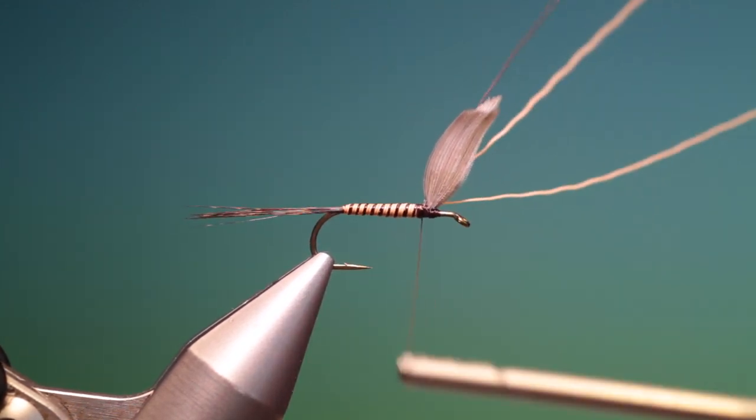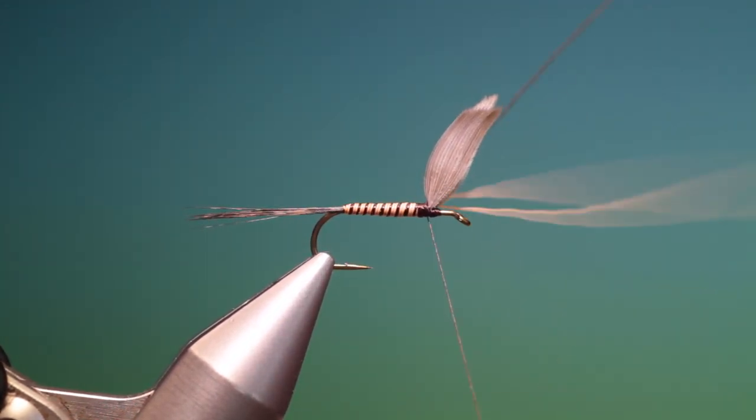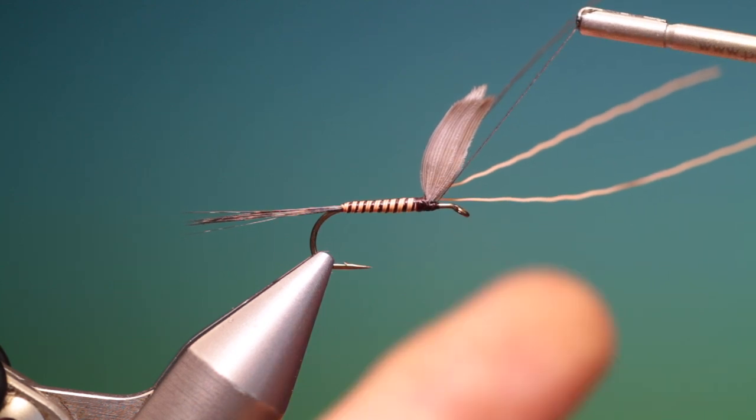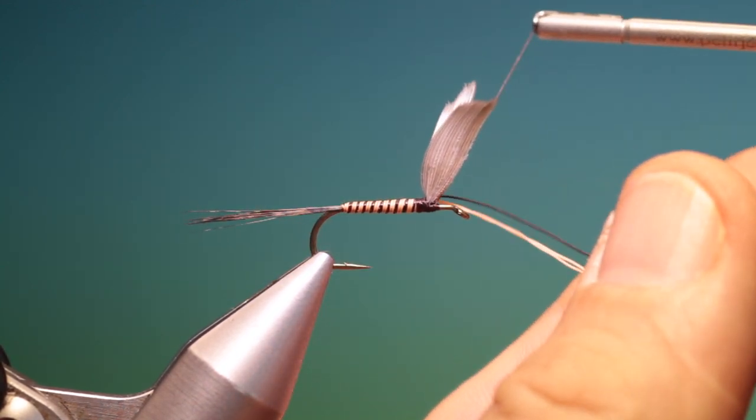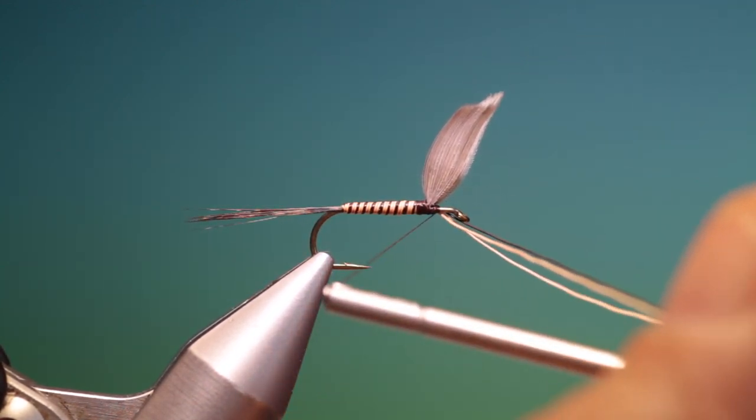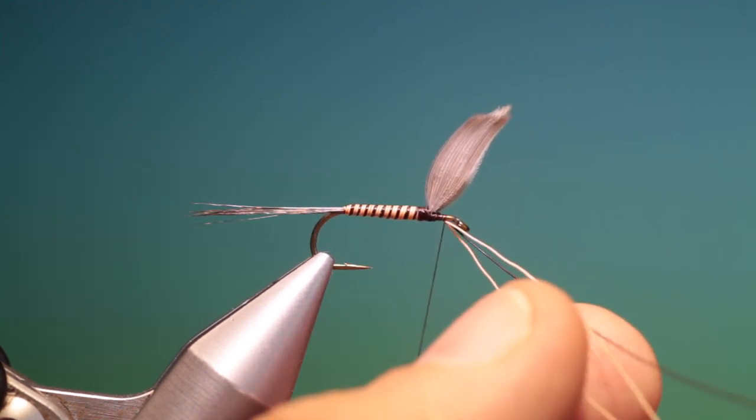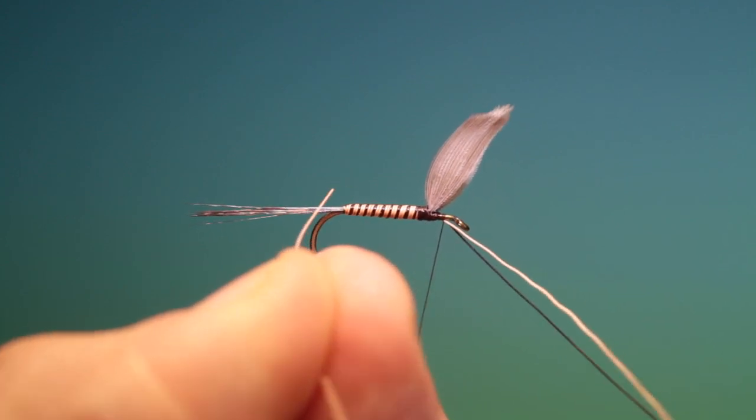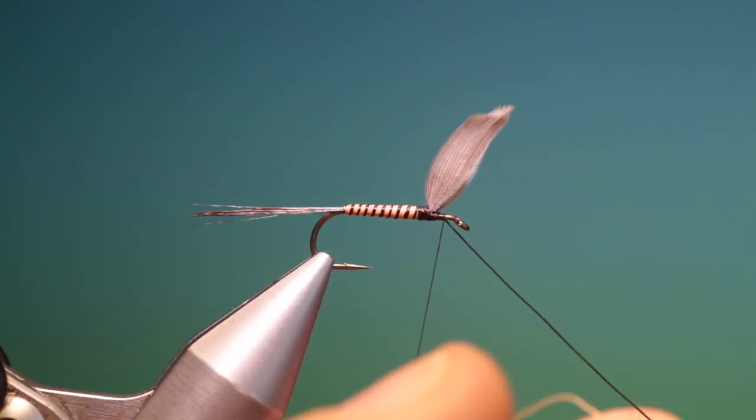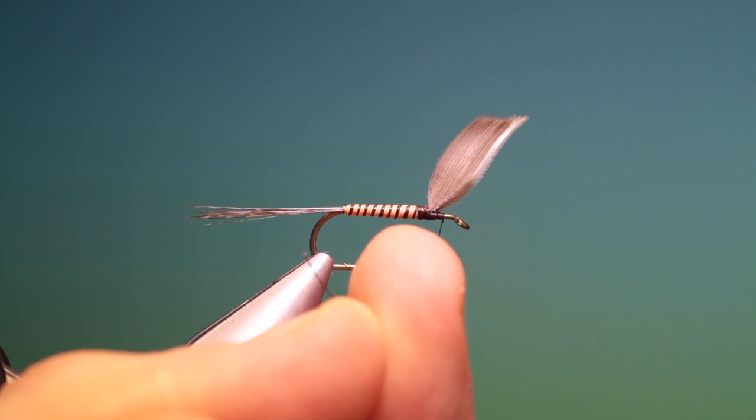And then we'll put those right in at the wing base. And we can go over a little bit back. And then we'll come forward. Take all three of them. And attach them at the front. Put some tension on your tying thread.